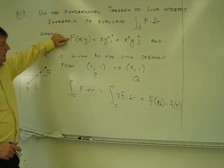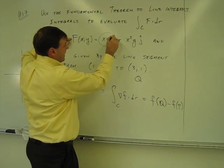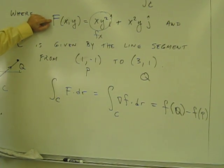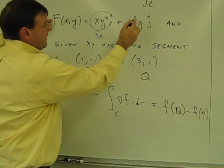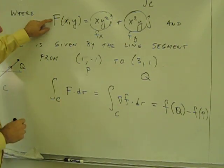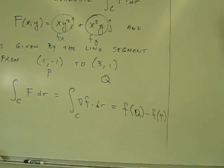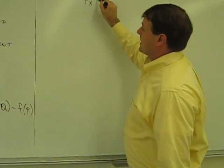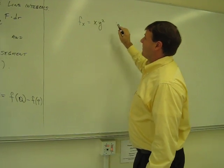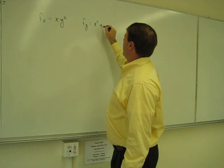Now, if this vector field is the gradient, then that means that this term right here is the partial derivative — the first partial derivative with respect to X — and this piece right here is the partial derivative with respect to Y. So let's get started. I must have that F_X is equal to XY squared, and I must have that F_Y is equal to X squared Y.